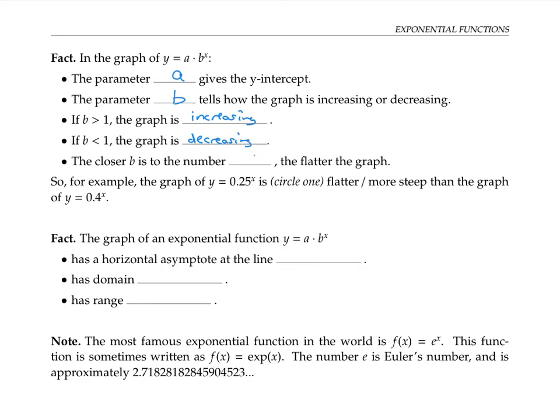The closer b is to the number one, the flatter the graph. So for example, if I were to graph y = 0.25^x and y = 0.4^x, they would both be decreasing graphs since the base for both is less than one. But 0.25 is farther away from one, and 0.4 is closer to one. So 0.4 is going to be flatter, and 0.25 is going to be more steep.